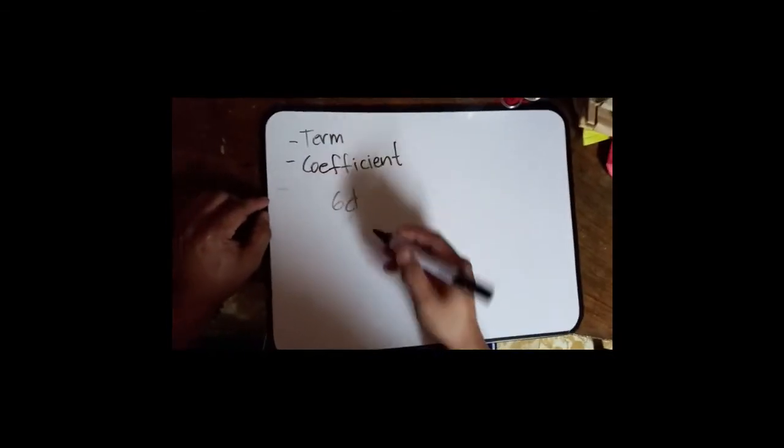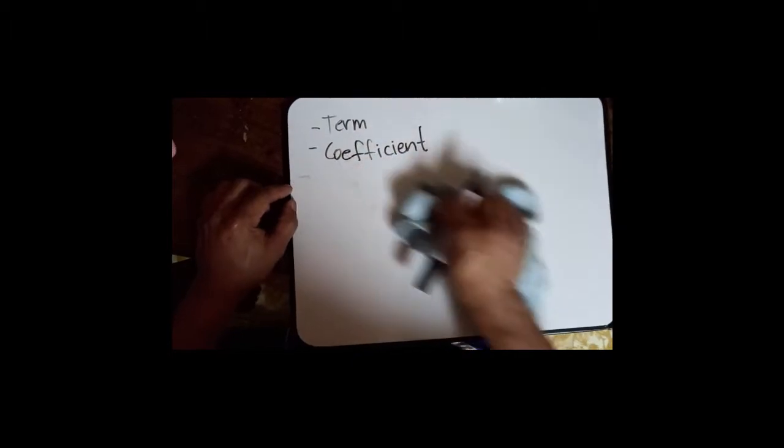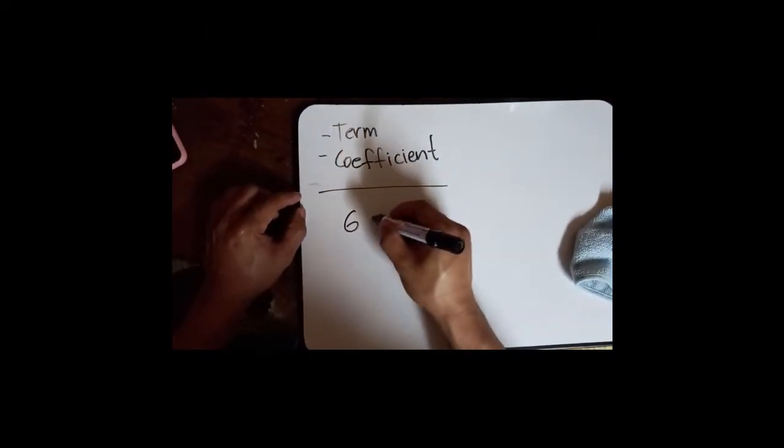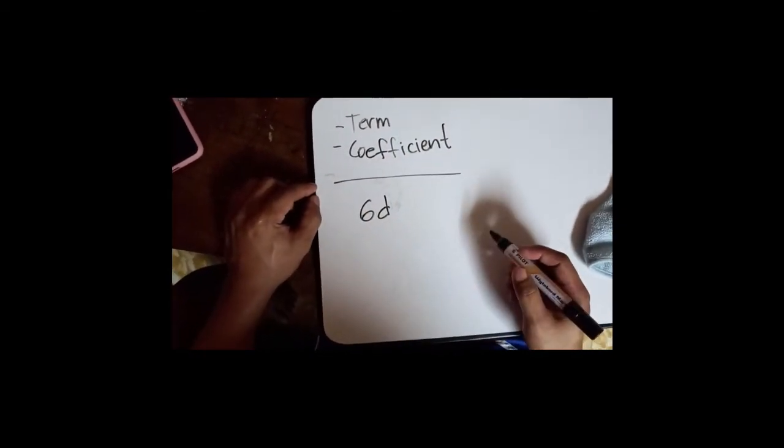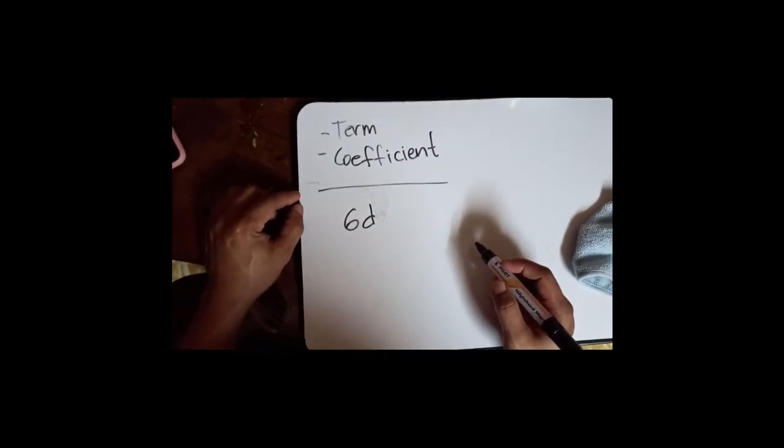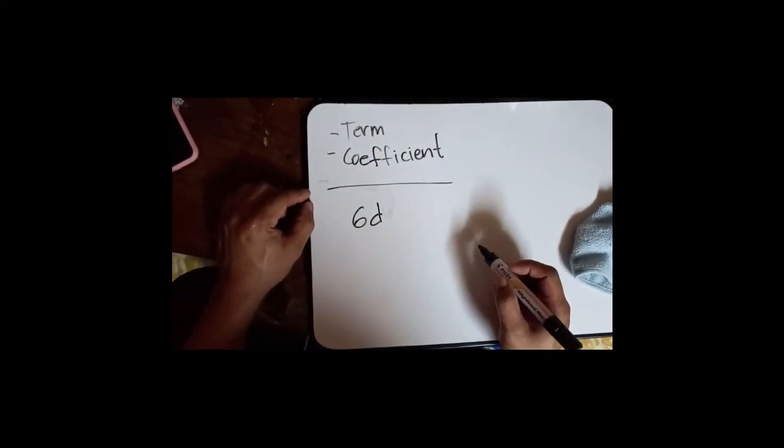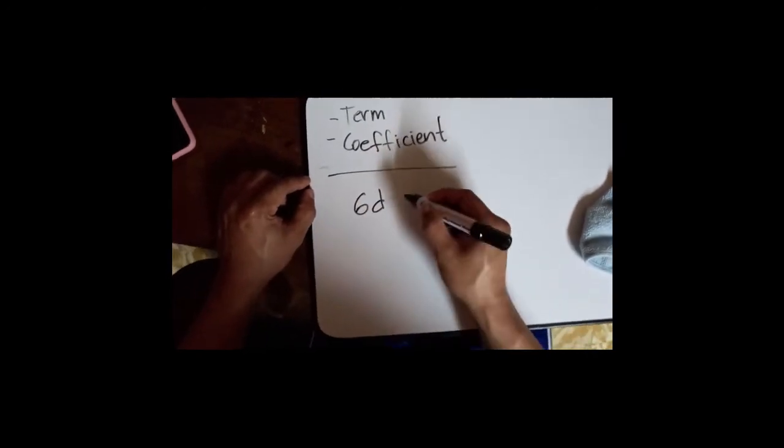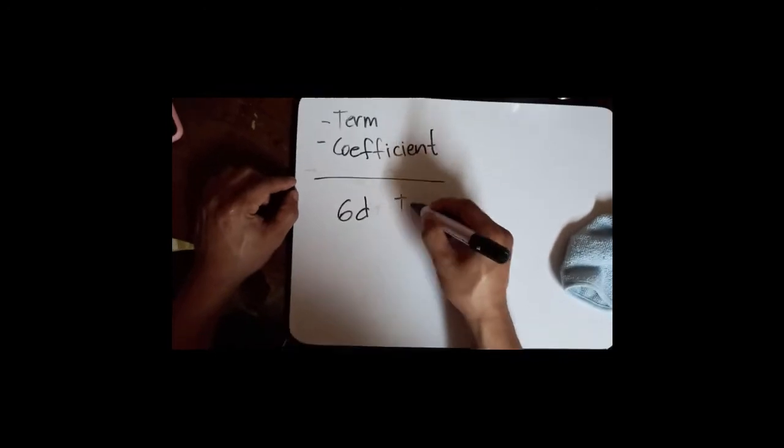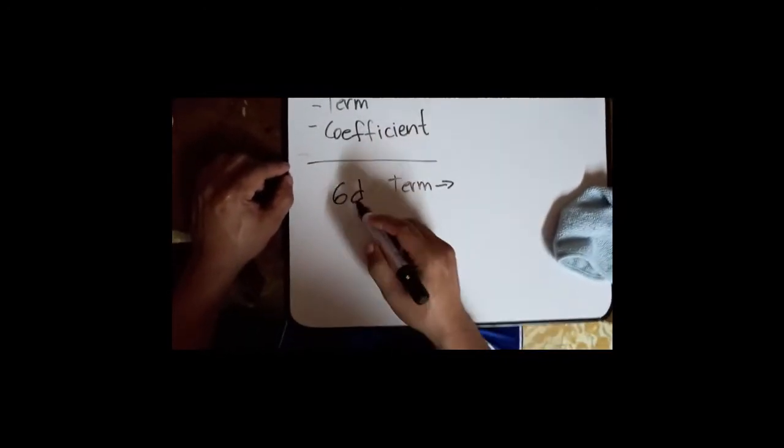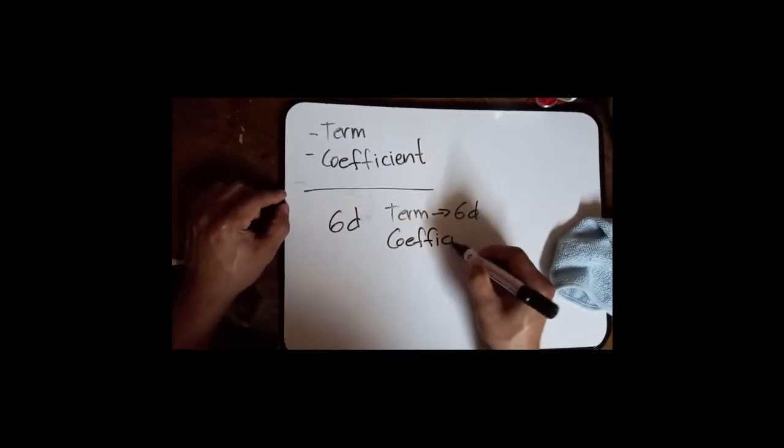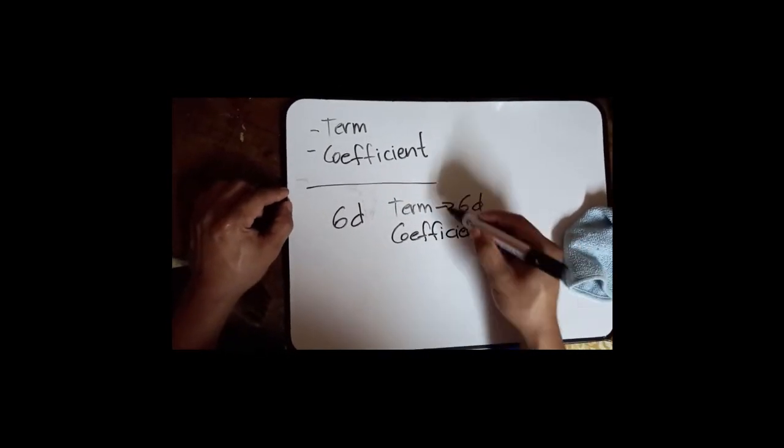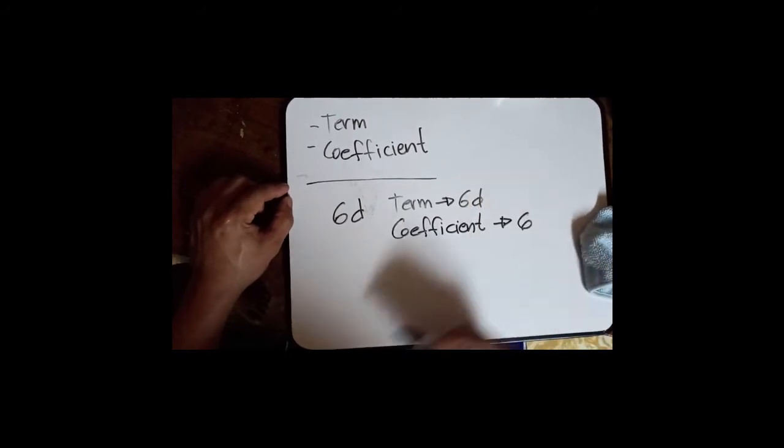Let's say we have this example: 6d. So 6d here is an example of a term, and the coefficient of this term is the leading number. So the term here is 6d, the coefficient is 6, the leading number.